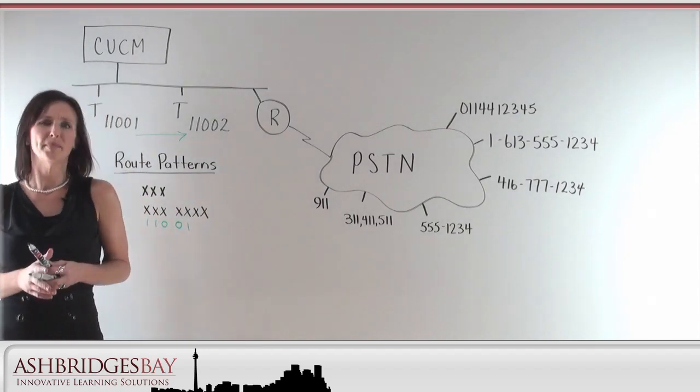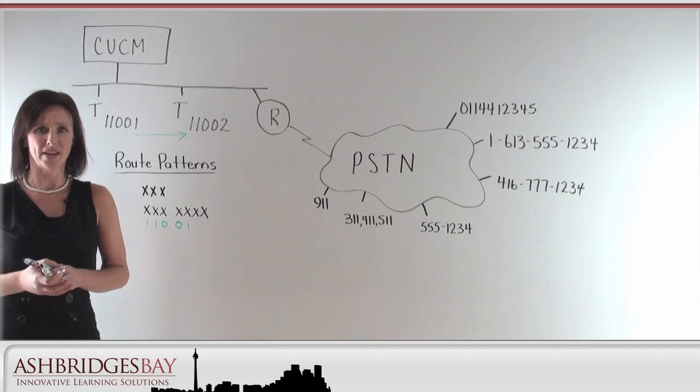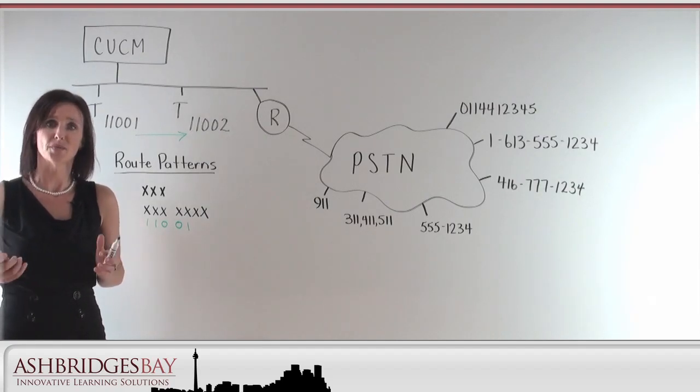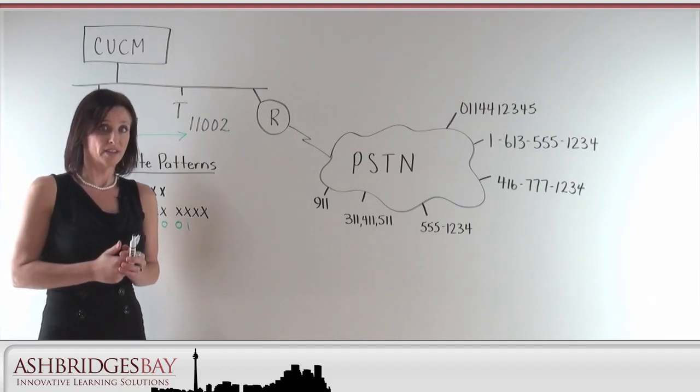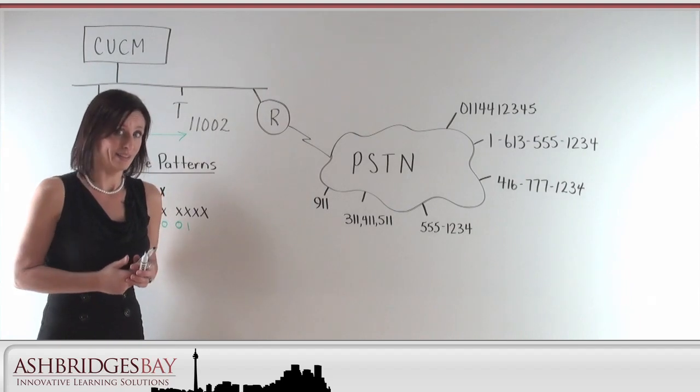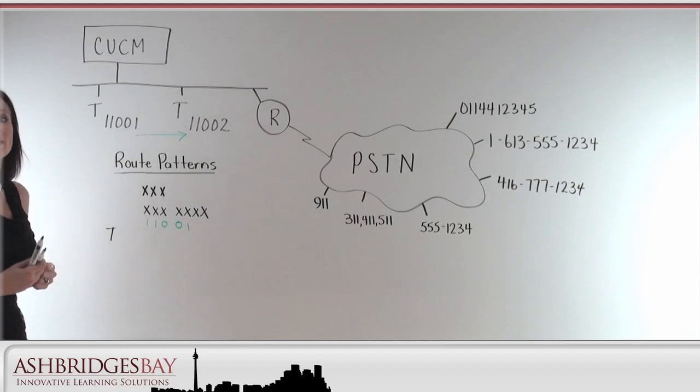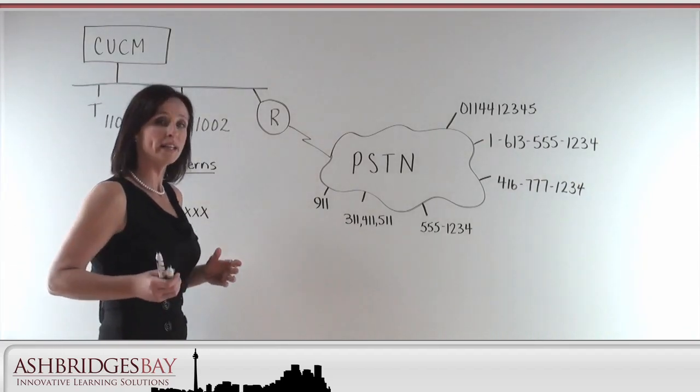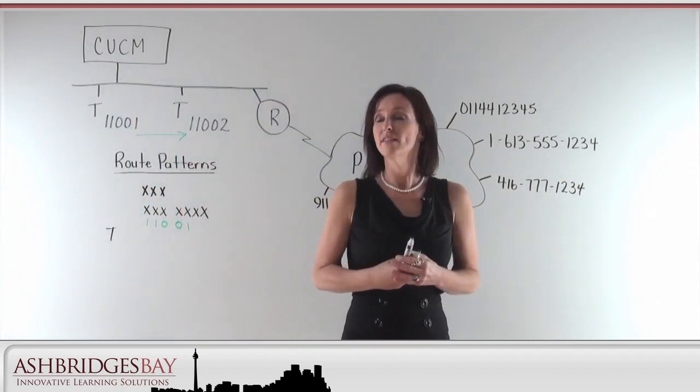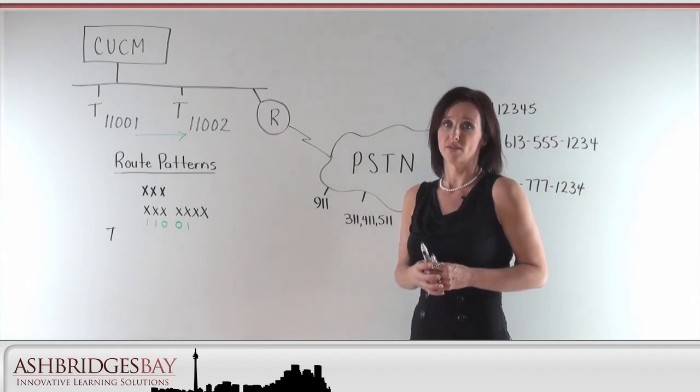So, what's going to happen in your company if every time somebody dials a number they have to wait five seconds for it to start ringing? Complaints are going to come rolling in. And we don't want that to happen. When you're setting up your dial plan, the T302 timer is your enemy. So, we can see that our method of using just X's is not going to work.